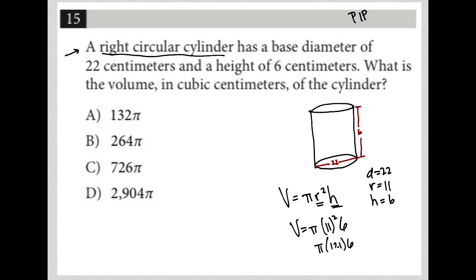This becomes 726π, right? Because we always put our number in front of the symbol π. So there's our volume for this right circular cylinder. So 726π is our correct answer. Therefore, choice C is correct.